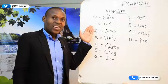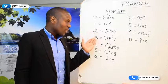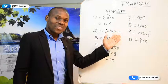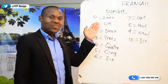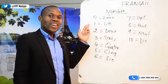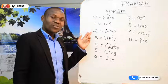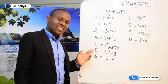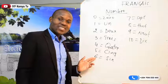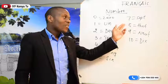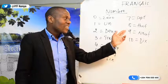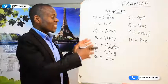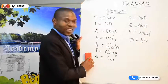So: zéro, un, deux, trois, quatre, cinq, six, sept, huit, neuf, dix. Let's revise once more: zéro, un, deux, trois, quatre, cinq, six, sept, huit, neuf, dix. That's it — those are the numbers and we did this in class.